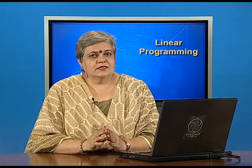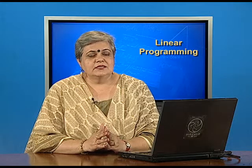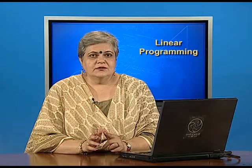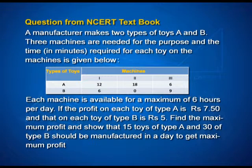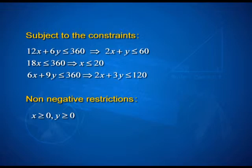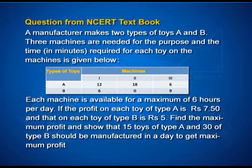I am taking the same problems that we discussed in our last lesson, where we focused on how to formulate. Today, our focus is how to solve. The first problem is from your NCERT book, question number 4, page 526. We saw that the Linear Programming model is: maximize Z equals 7.50x plus 5y, subject to the constraints 2x plus y less than or equal to 60, x less than or equal to 20, 2x plus 3y less than or equal to 120, and non-negative restrictions x and y both greater than or equal to 0. Here x is the number of type A toys and y represents the number of type B toys to be manufactured.